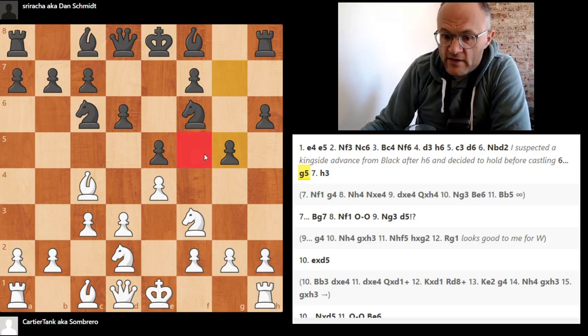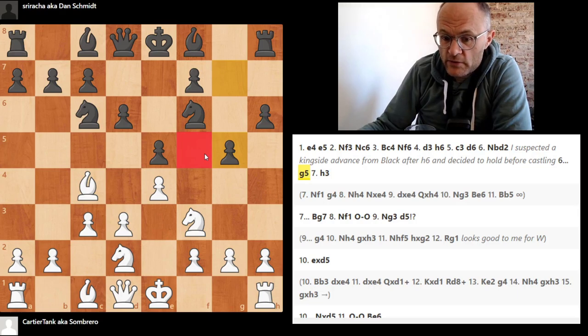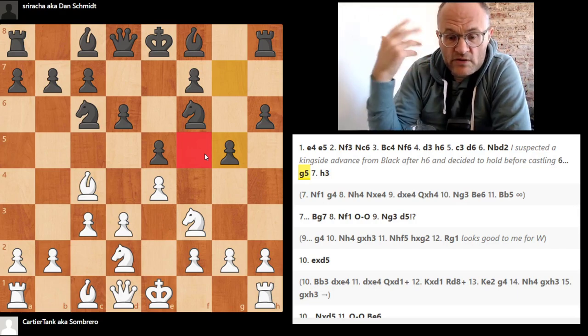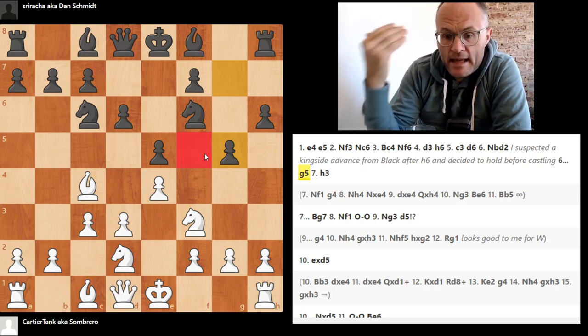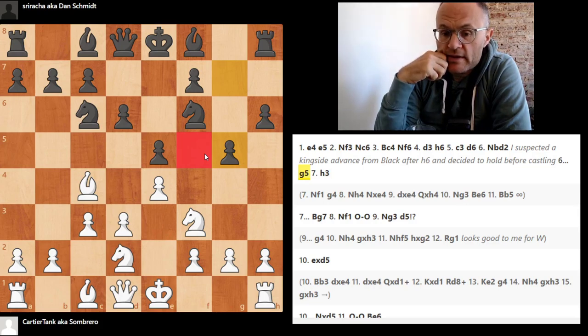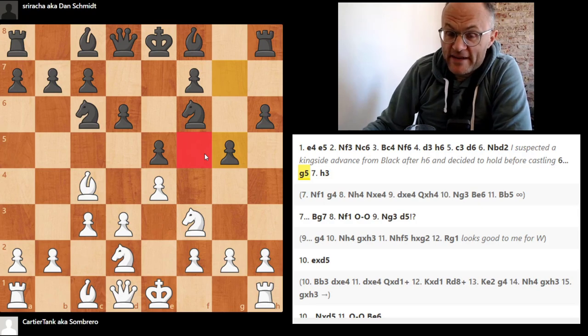This is going to become our key square, and that's why the light squares in particular are going to be very critical. And maybe you could even construe it as a debate: can black get away with giving away this light square? I think he can, but he has to be careful not to let it slide into white's possession.